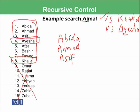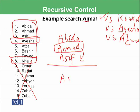Next we select the midpoint again, which is Ahmed, and compare it with Ajmal. H is lower in ASCII than J, so Ajmal can be found somewhere after Ahmed. We select Asif. In the next iteration we have only one entry as the sub-list — Asif — and that is also the midpoint.